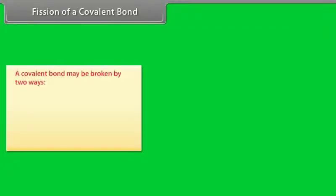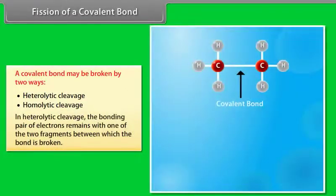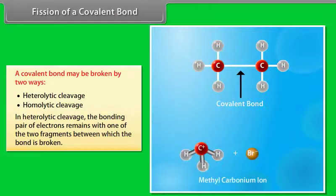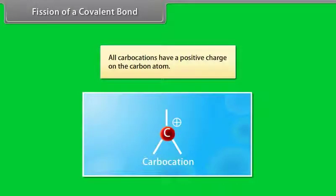A covalent bond may be broken in two ways: heterolytic cleavage and homolytic cleavage. In heterolytic cleavage, the bonding pair of electrons remains with one of the two fragments between which the bond is broken. All carbocations have a positive charge on the carbon atom.